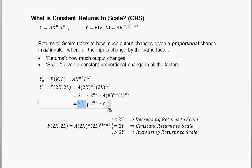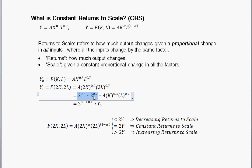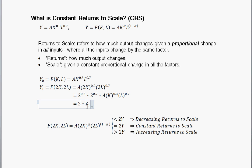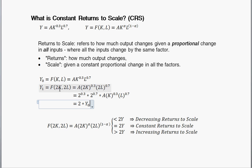The other thing to note is 2 raised to the 0.3 times 2 raised to the 0.7. Whenever the base is the same, we can combine exponents by adding them. So 0.3 plus 0.7 equals 1, and 2 raised to the 1 is just 2. So by doubling the inputs, our new level of output is equal to 2 times the initial level of output. By doubling the inputs, we've doubled initial output. So this is exactly constant returns to scale.